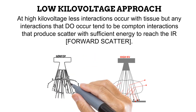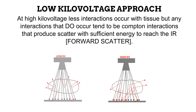This is unlike Compton interactions that occur at low KV. When scattered photons are produced at low KV, they do not have sufficient energy to make it to the image receptor. This is why it is advised to use a low KV when trying to avoid excess scatter on a radiograph.